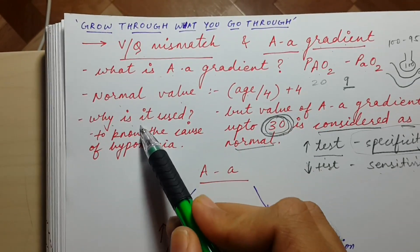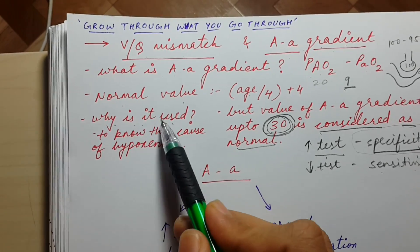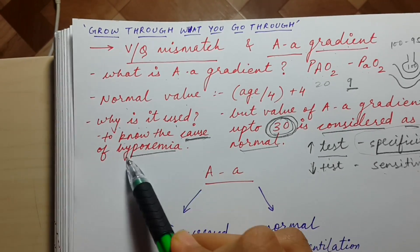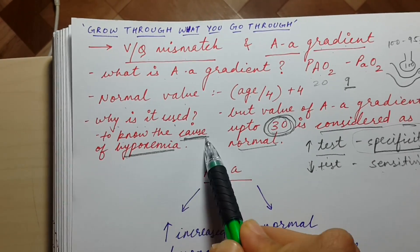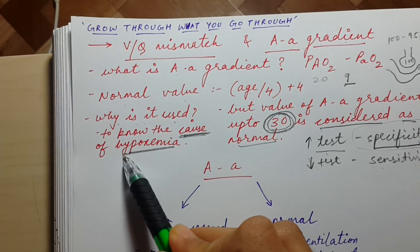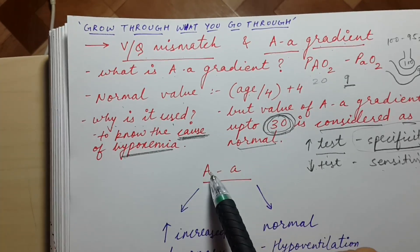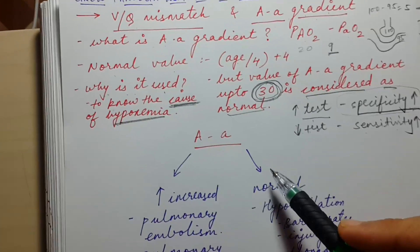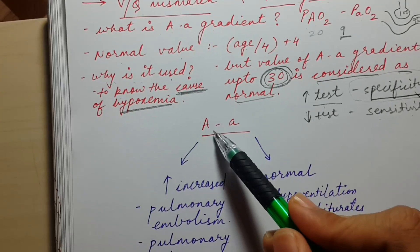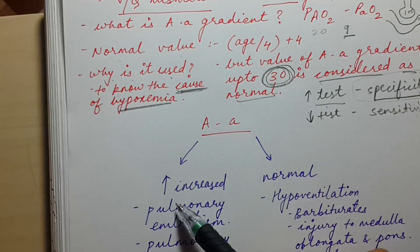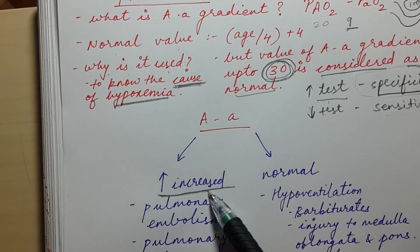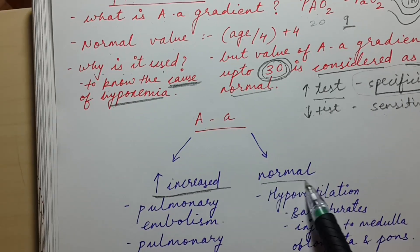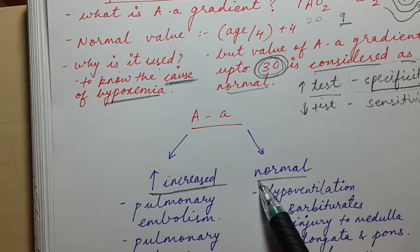Now, why is AA gradient used? AA gradient is used to know the cause of hypoxemia. If a hypoxemic patient comes in, we can know the cause by the AA gradient. There are some causes of hypoxemia that will result in an increased AA gradient and some causes that will result in a normal AA gradient.